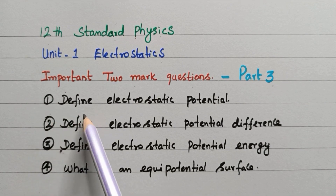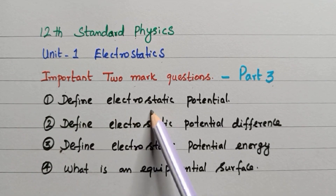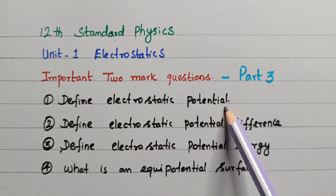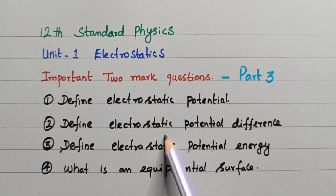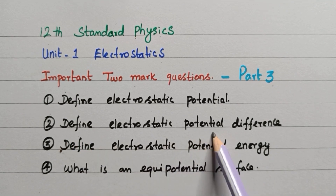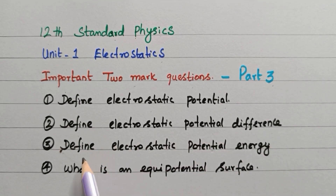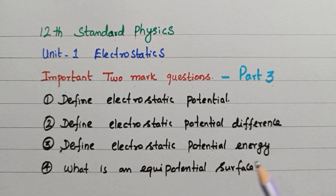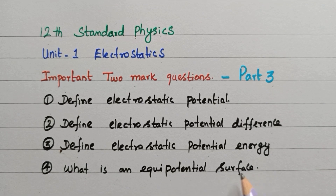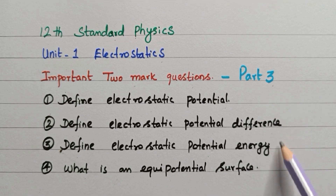The first question: define electrostatic potential. The second question: define electrostatic potential difference. The third one: define electrostatic potential energy. And the last one: what is an equipotential surface? These are the 4 questions I am going to discuss in this video.